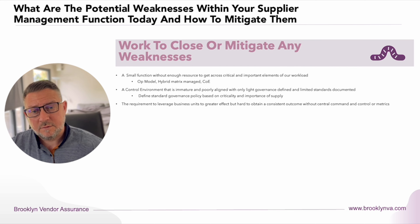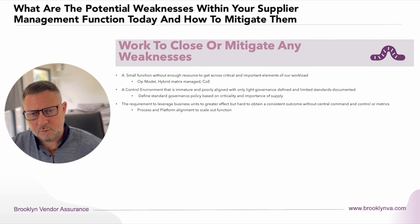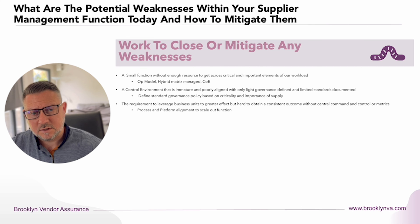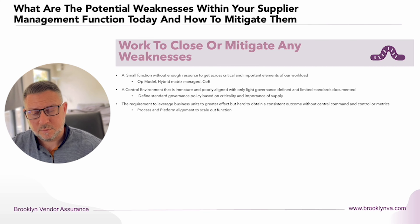Related to the first point, there is a requirement to leverage business units to greater effect, but it's hard to obtain a consistent outcome without central control, command, or metrics. Once you've worked out your operating model and defined your standard governance, you need to determine which processes to embed into a digital platform to deploy out and help align business units to scale the function. This means having processes aligned to a platform so they're done in a consistent, repeatable manner every time, with a consistent outcome you can put metrics against — seeing which suppliers are being managed effectively, which aren't, and deploying on an exception basis to enhance performance of a failing deal.